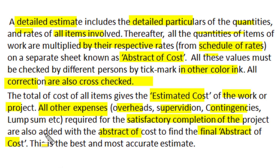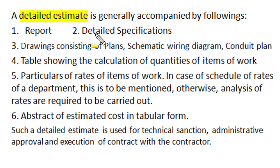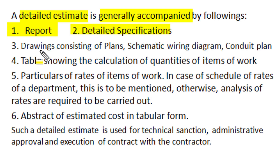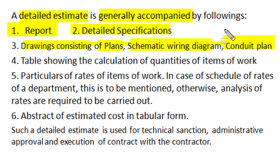This is the best and most accurate estimated value of the project. A detailed estimate of any electrical installation project is generally accompanied by a detailed project report, with all detailed specifications of material and workmanship and all important technical details. It also includes all required drawings, plan of the project, schematic wiring diagram, and the conduit plan describing the path of wire and cable in the project.